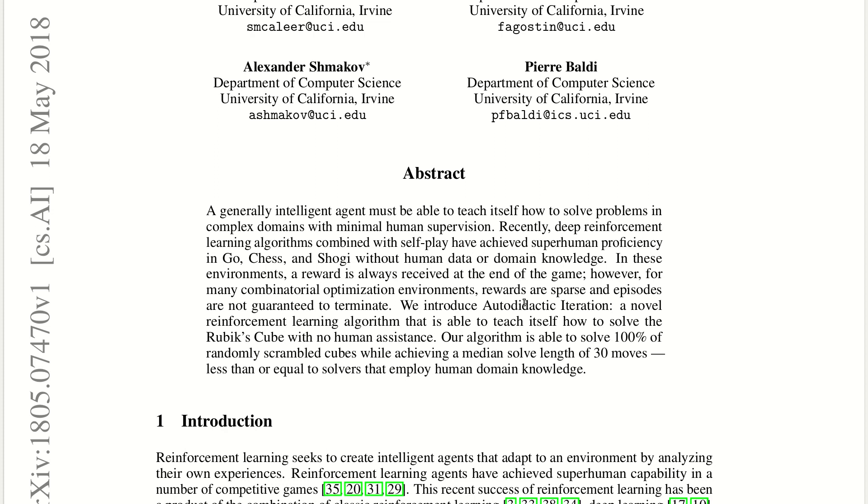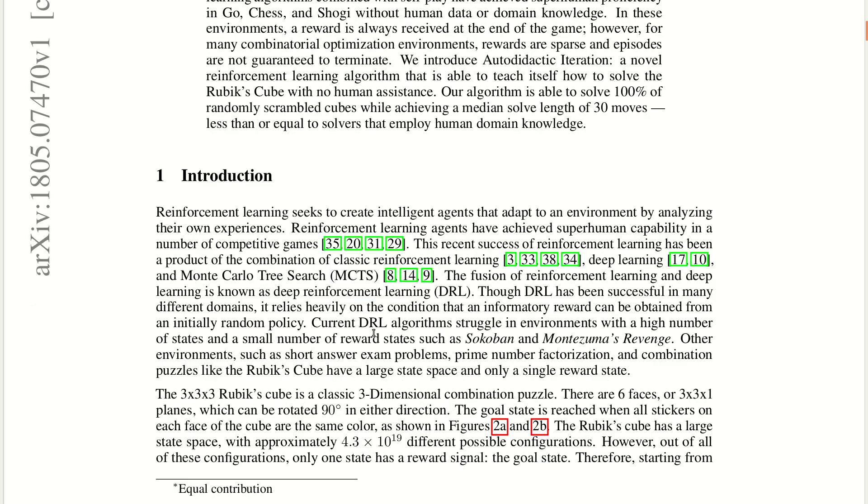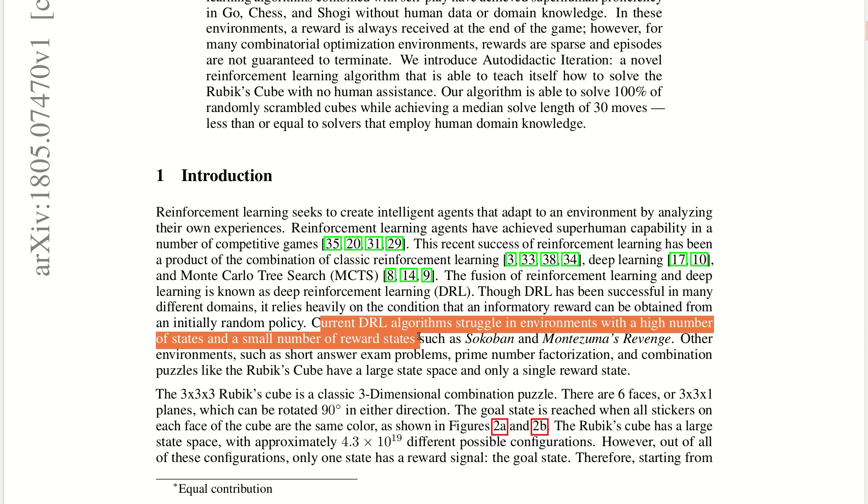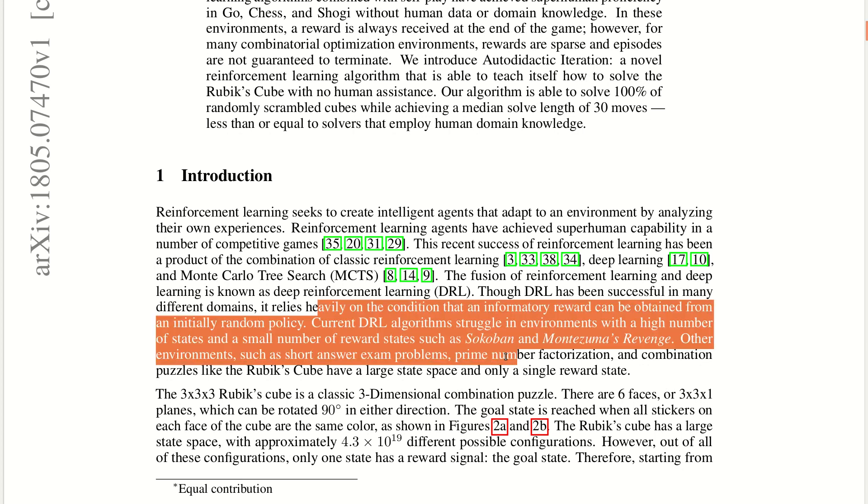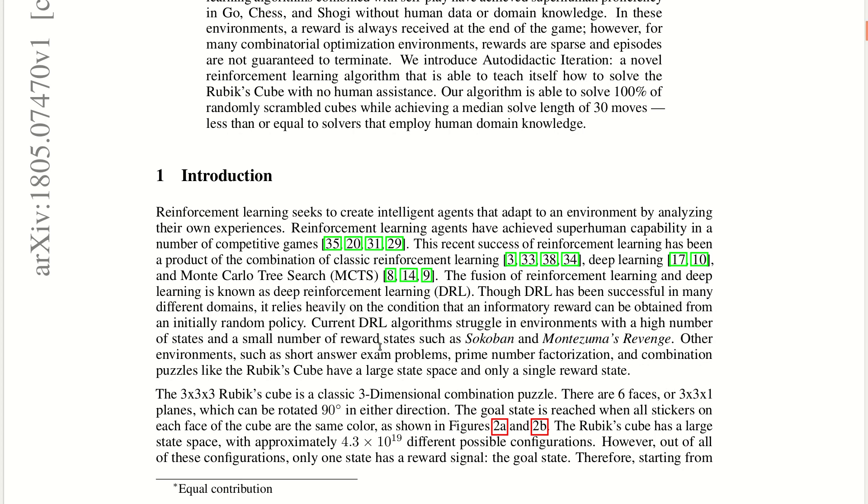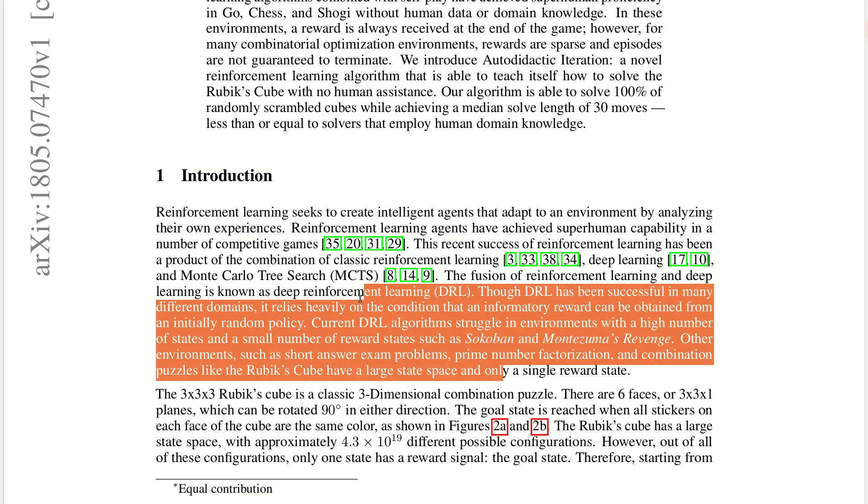It's just a solver that is competing with the standard well-established Kociemba algorithm. Rubik's cube is a sparse reward puzzle - there's only one solved state where all six sides have the same color. This is a hard task for reinforcement learning.